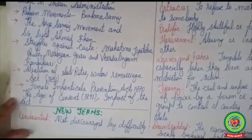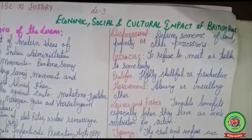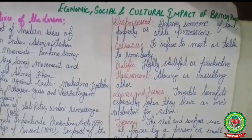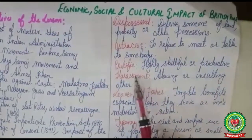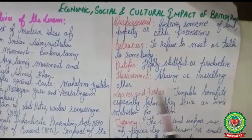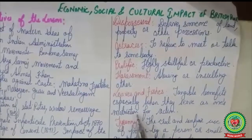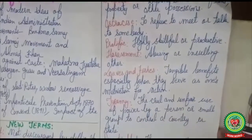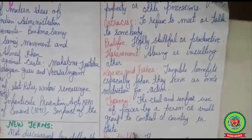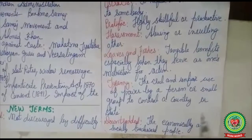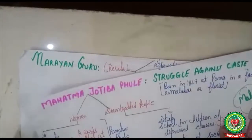Before going ahead, let us discuss the new terms of the lesson. 'Undaunted' means not discouraged by difficulty. 'Dispossessed' means to deprive someone of land, property, or other possessions. 'Ostracize' means to refuse to meet or talk to somebody. 'Prolific' means highly skillful or productive. 'Harassment' means abusive or insulting behavior. 'Loaves and fishes' refers to tangible benefits, especially when they serve as one's motivation for action. 'Tyranny' means the cruel and unfair use of power by a person or small group to control a country or state.